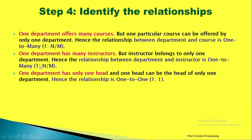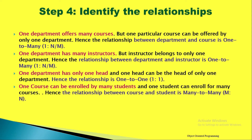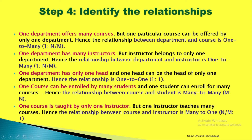One department has only one head — one department, one head instructor — so the relationship between department and instructor for this is one-to-one. One course can be enrolled by many students and one student can enroll for many courses, so the relationship is many-to-many. One course is taught by one instructor, but one instructor can teach many courses, so the relationship between course and instructor is many-to-one.